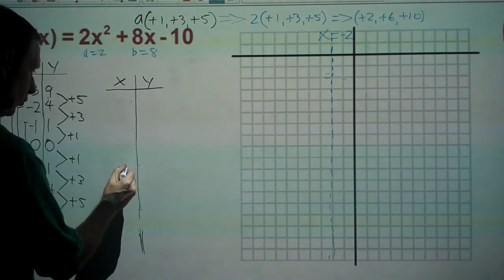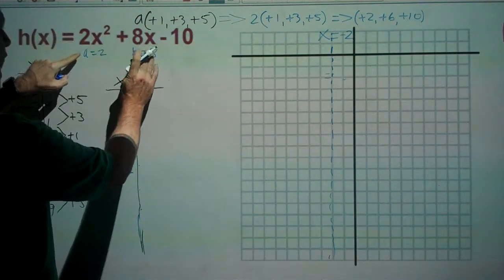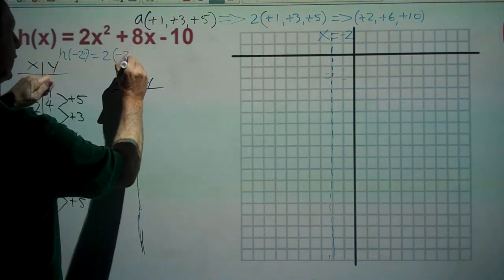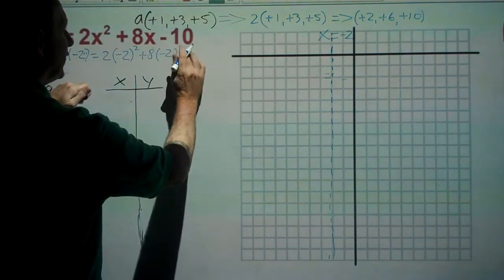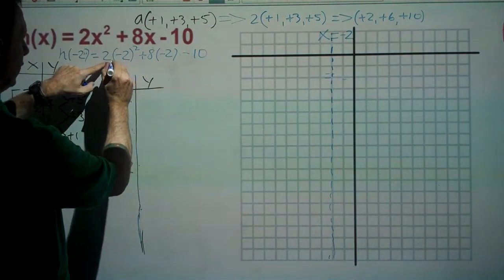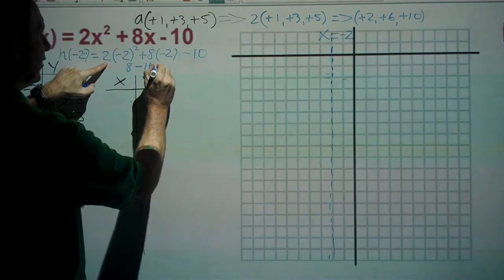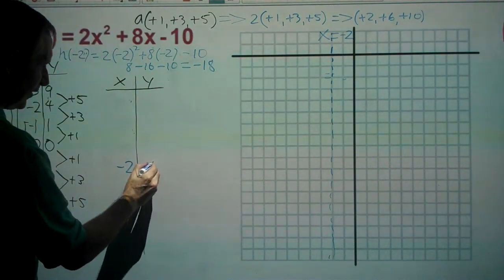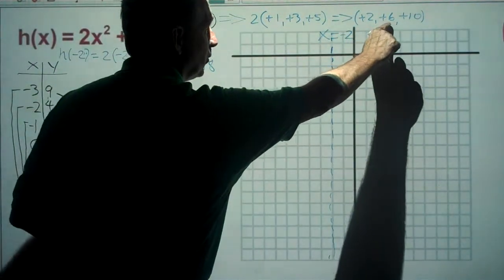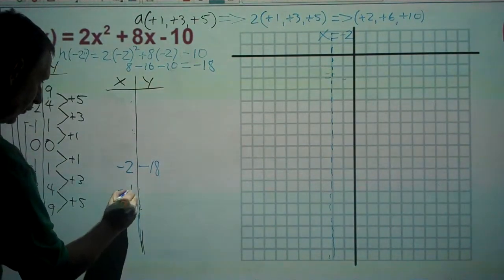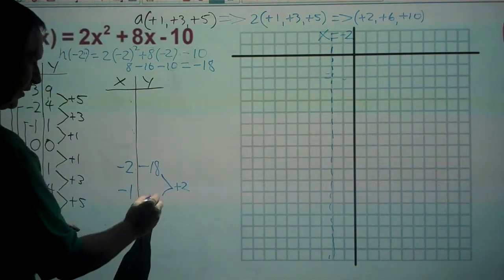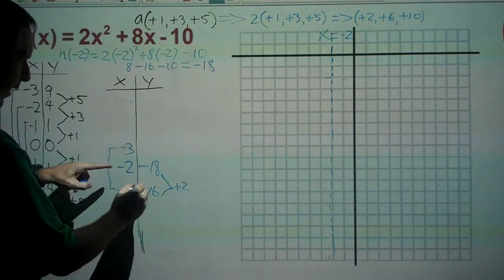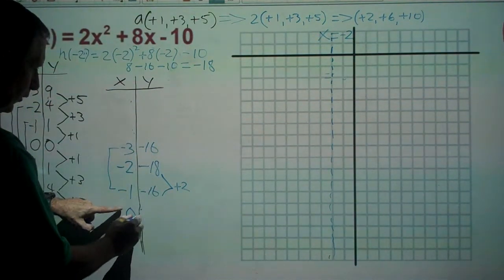We plug negative two into the equation: h(−2) = 2(−2)² + 8(−2) − 10 = 8 − 16 − 10 = negative eighteen. So our vertex is at (−2, −18). Using our step pattern of plus two, plus six, plus ten: input negative one gives negative 18 plus 2 = negative sixteen; input negative three also gives negative sixteen. Input zero gives negative 16 plus 6 = negative ten; input negative four also gives negative ten.